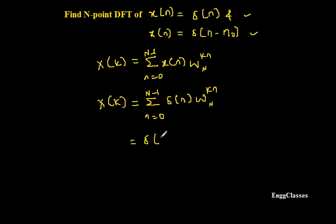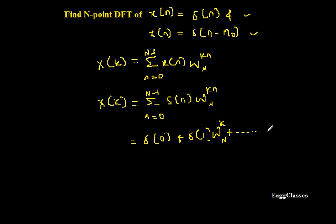If I put n=0, I get δ(0) · W_N^0, which is 1, plus if I put n=1 I get δ(1) · W_N^k, plus similarly the last value which is δ(N-1) · W_N^(k·(N-1)).